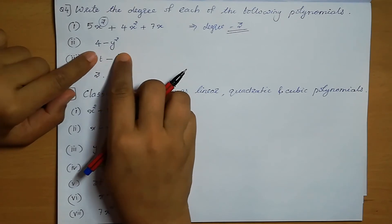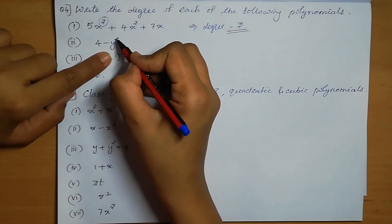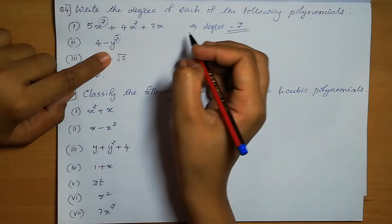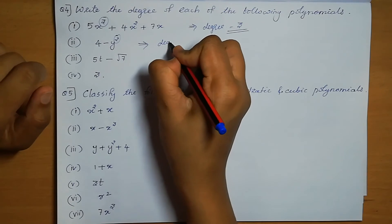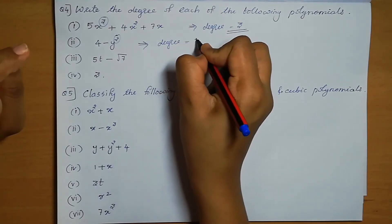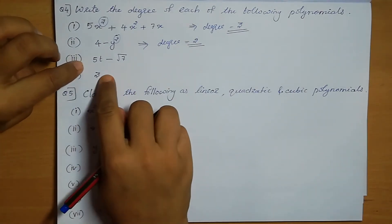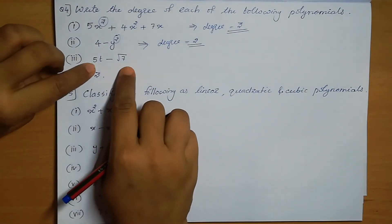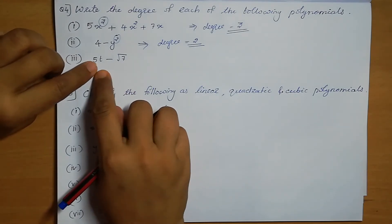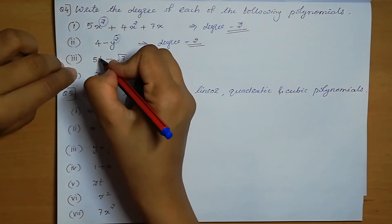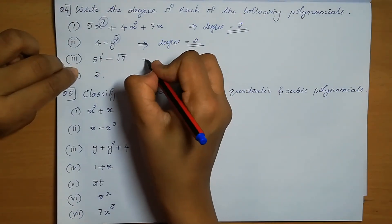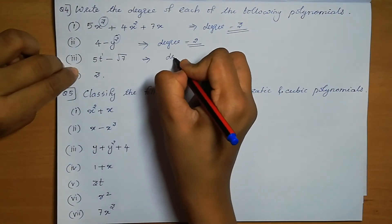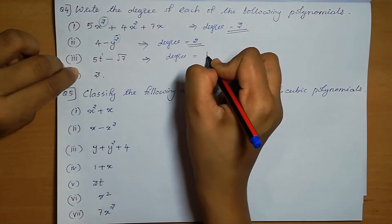For 4 minus y squared, there is only one variable y and its power is 2, so the degree is 2. For 5t minus root 7, the variable is t with power 1, so the degree of the polynomial is 1.